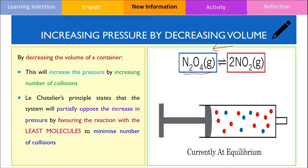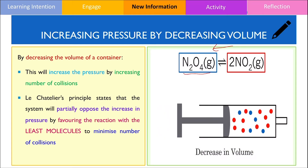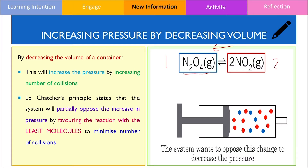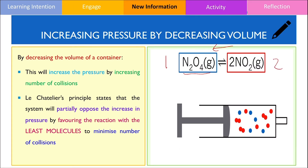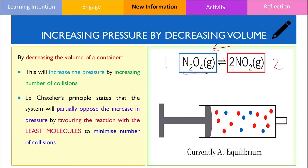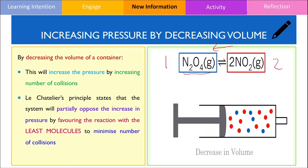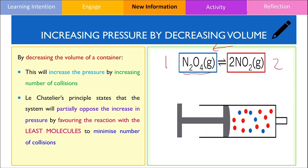According to the chemical equation, there is one reactant molecule but there are two product molecules. Hence, equilibrium shifts to the left or favours the reverse reaction, resulting in the formation of N₂O₄.